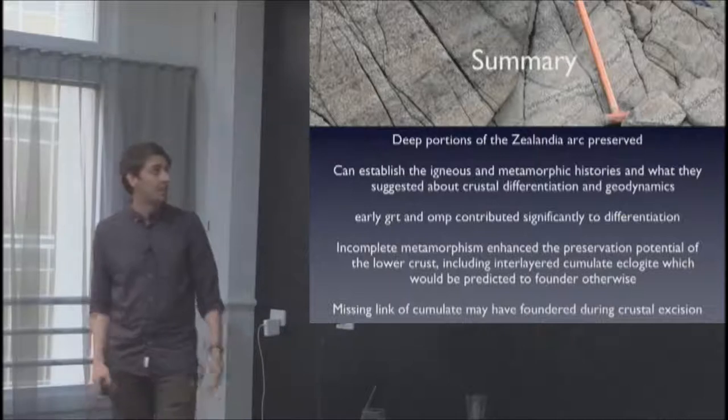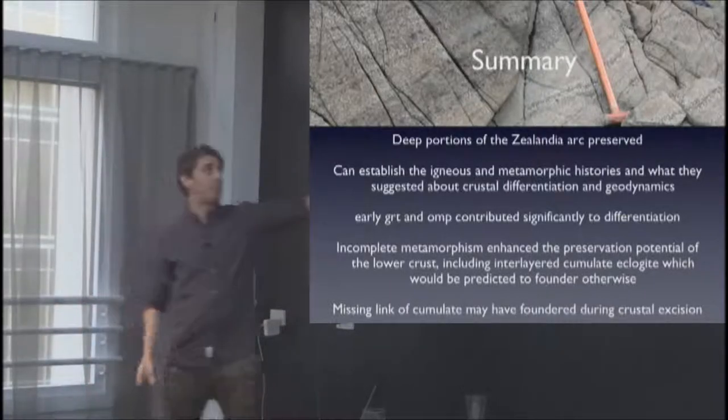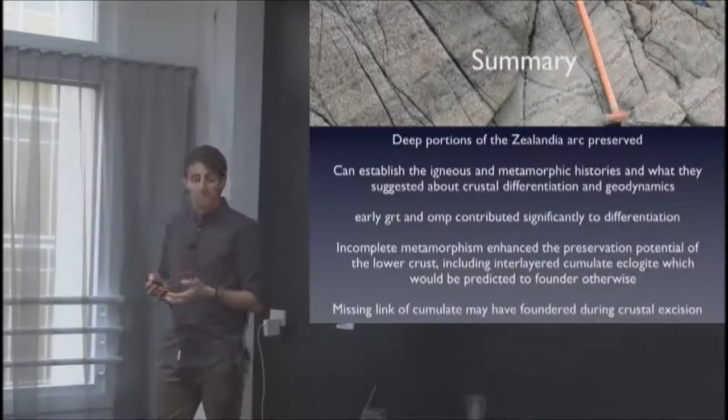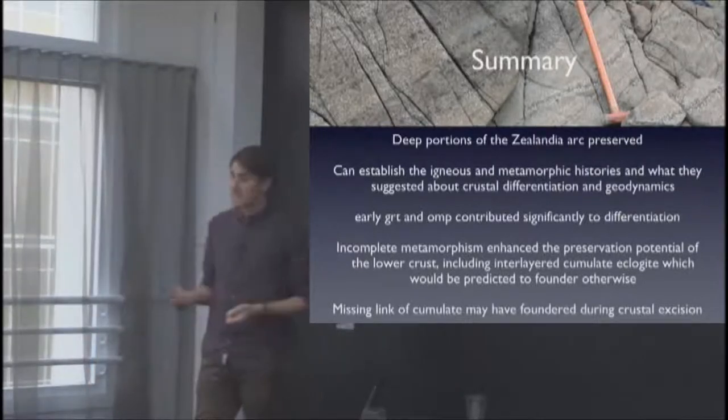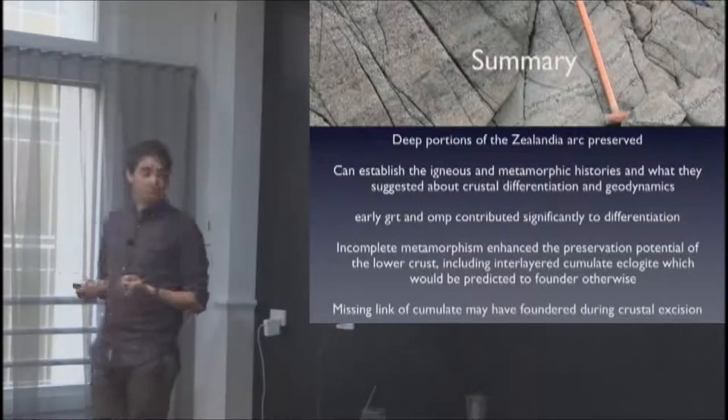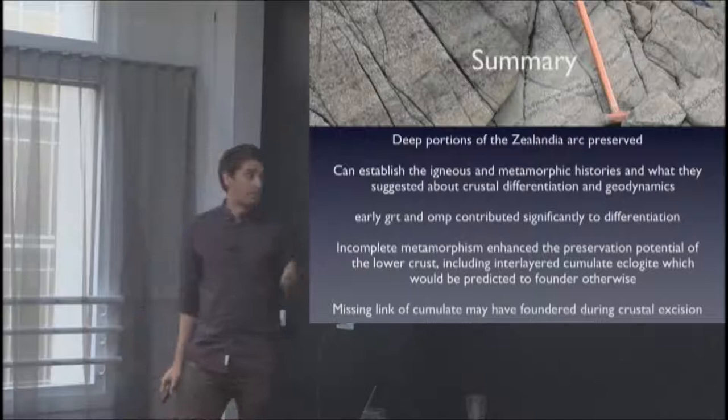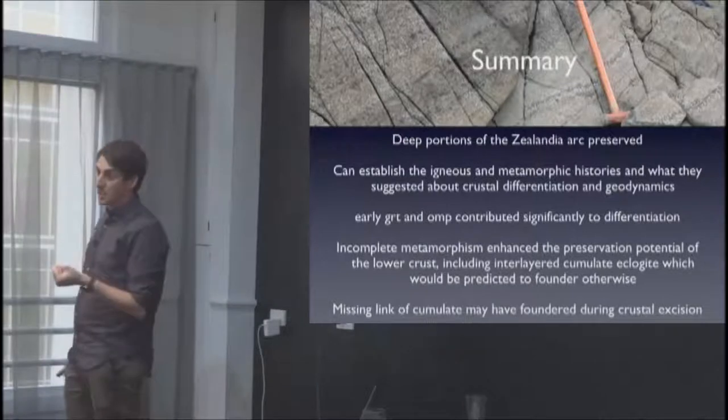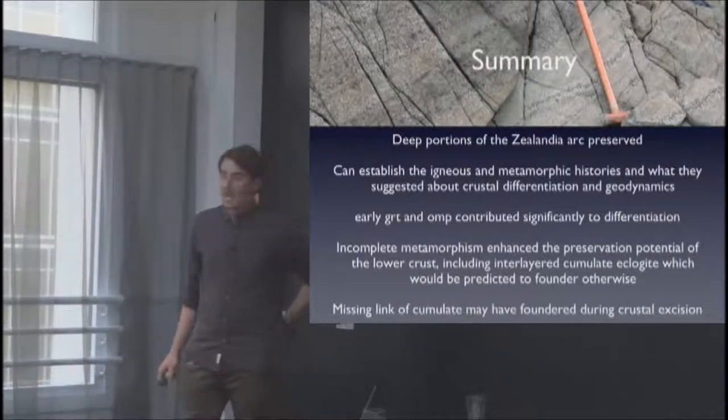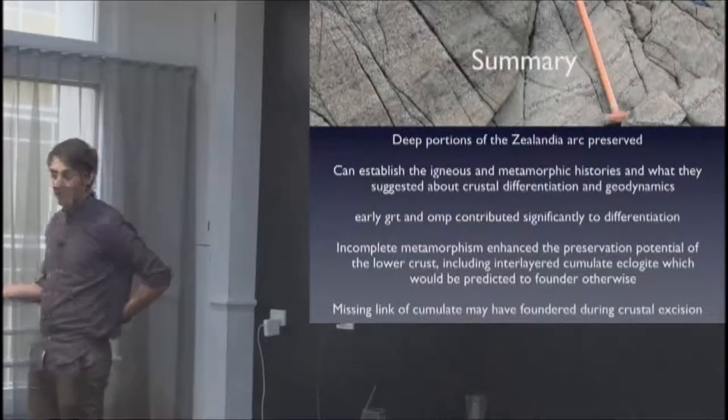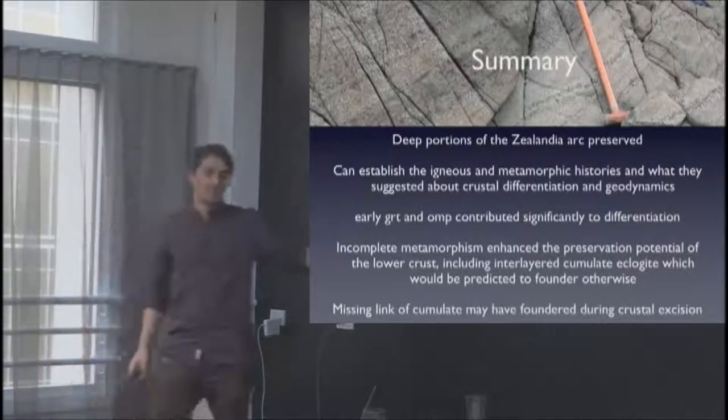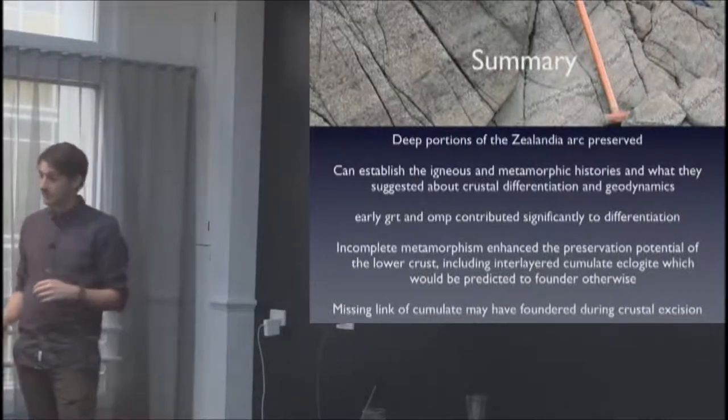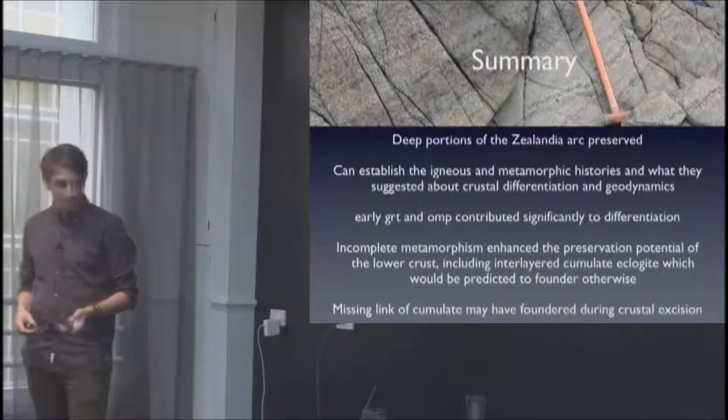In summary, in New Zealand we preserve deep proportions of an arc quite uniquely which allows us to evaluate histories of lower crust generation in magmatic systems. We can establish igneous and metamorphic histories and to unravel different periods of the magmatic system. Early garnet and omphacite contributed significantly to the differentiation of the magma. Incomplete metamorphism enhanced the ability to preserve material at depth. And potentially, cumulate material could have been lost from the system during gravitational collapse. Thank you.